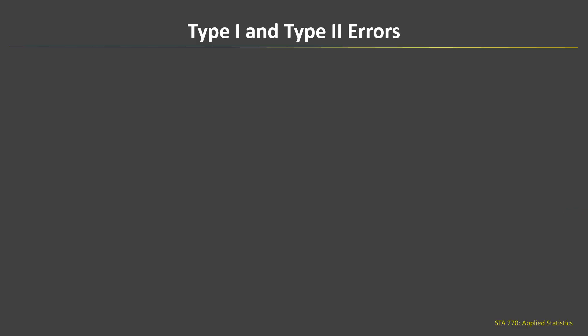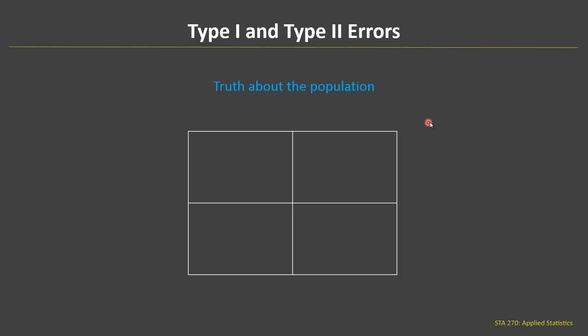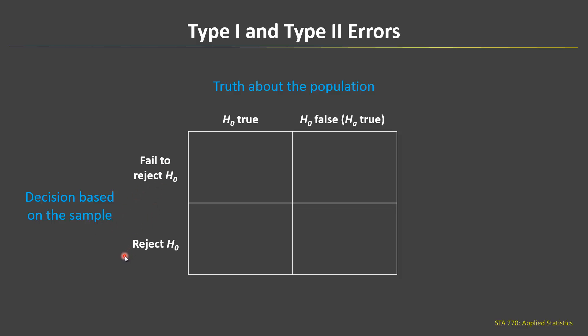In this video we're going to look at type 1 and type 2 errors associated with hypothesis testing, using a chart. Across the top, there's some truth about the population that we don't know — either the null hypothesis is true or the null hypothesis is false, meaning the alternative hypothesis is true. On the side, we take a sample and make a decision: either we fail to reject the null hypothesis or we reject the null hypothesis.